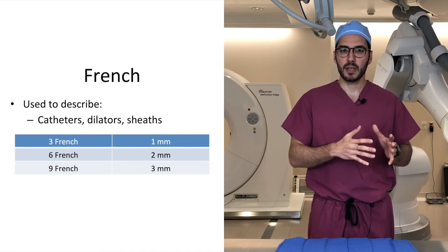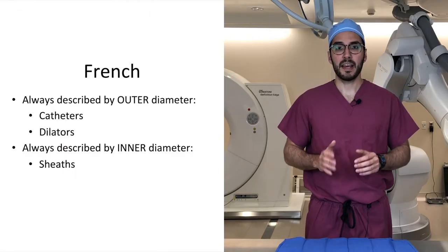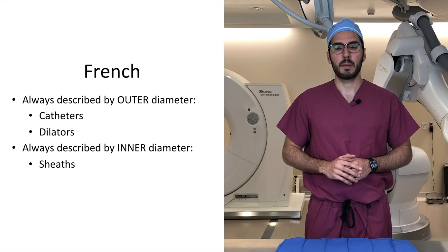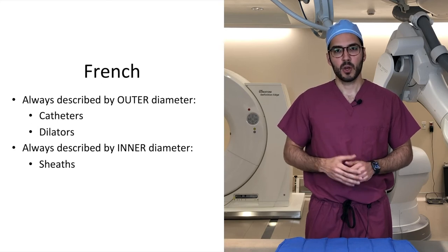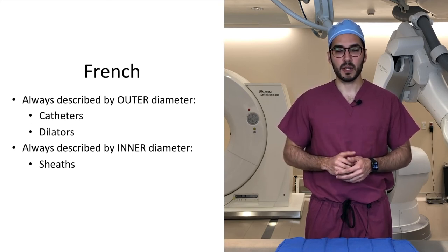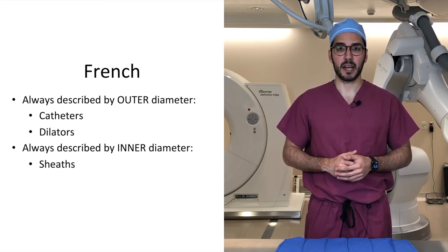So a 9 French catheter is 3 millimeters. When using the French sizing system, it is important to understand the concept of inner and outer diameter. The inner diameter describes the intraluminal diameter of a catheter, dilator, or sheath, whereas the outer diameter describes the intraluminal diameter plus the thickness of the side walls. Catheters and dilators are always described by their outer diameter, whereas sheaths are always described by their inner diameter — which makes sense, because we introduce equipment through sheaths, and it's important to know the maximum size catheter a sheath can accommodate.